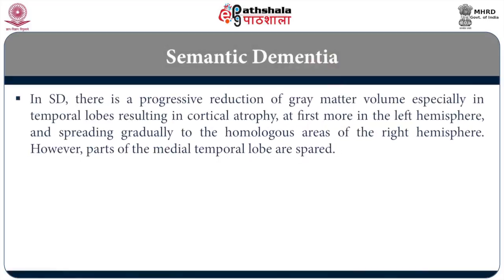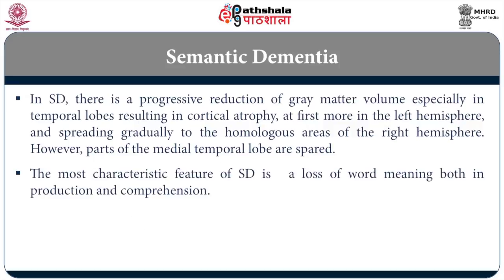In semantic dementia, there is a progressive reduction of grey matter especially in the temporal lobe. Initially it starts in the left hemisphere and gradually can spread into the right hemisphere. Parts of the medial temporal lobe can also be involved. One of the characteristic features of semantic dementia is loss of word meaning, both in production as well as comprehension.